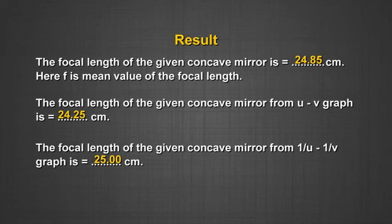Report your result using all three methods: the u-v graph, the 1/v versus 1/u graph, and the calculated value. All three should agree since the focal length of the mirror does not change. Remember, if you take fewer than five readings you will not have enough points for a reliable graph, so take at least five readings.